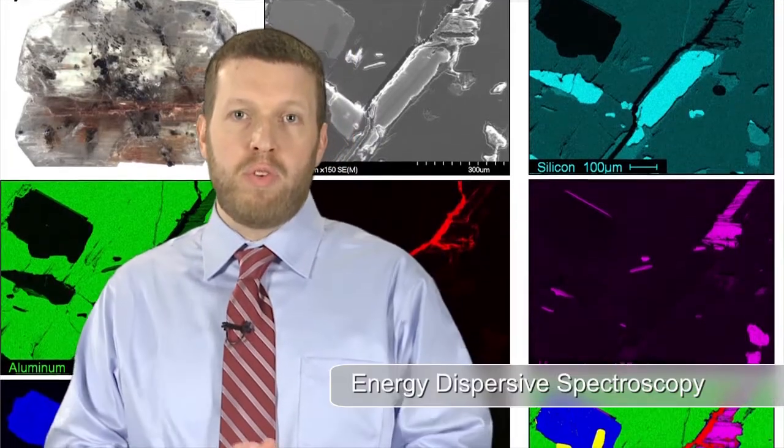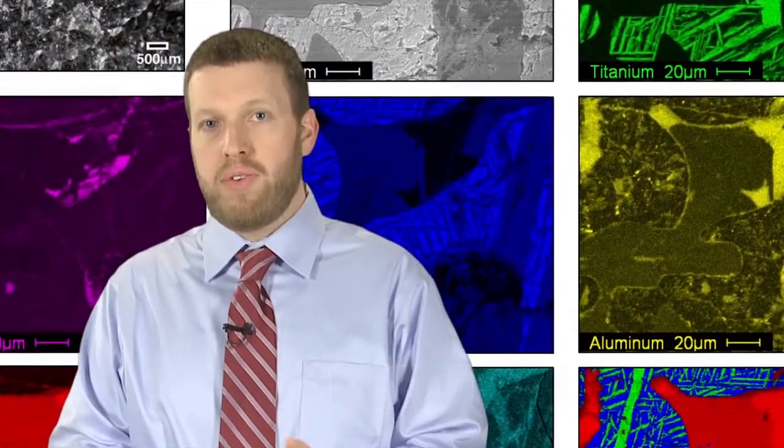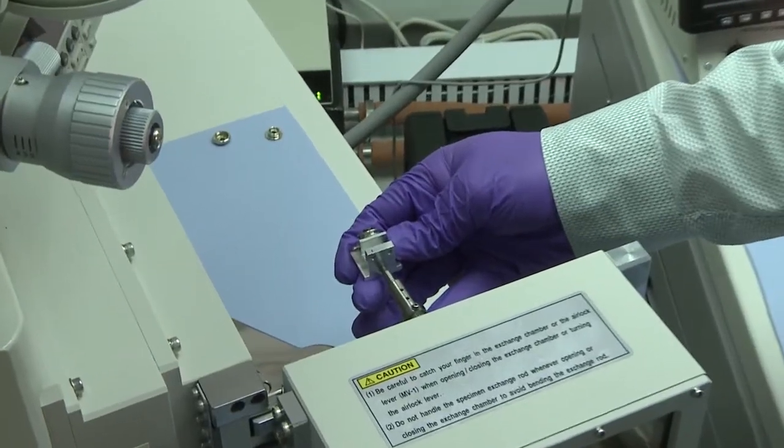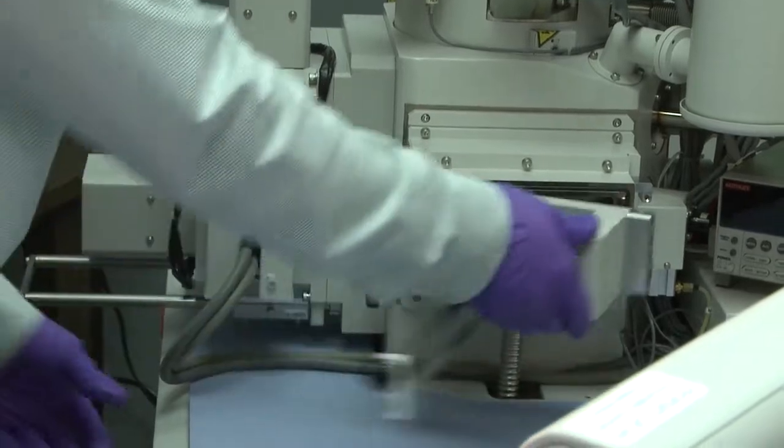One of these tools is energy dispersive spectroscopy, or EDS, which helps us to analyze the chemical composition of a sample. This technique is valuable, for example, when we're conducting a failure analysis. Identifying the contaminants on a fractured component can help determine the cause of failure.